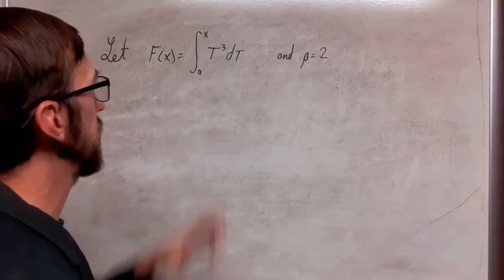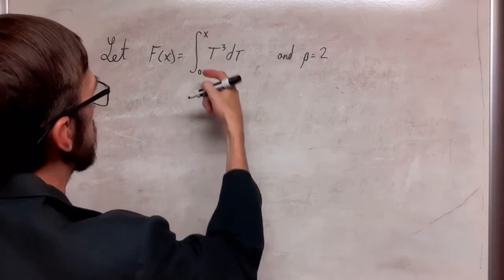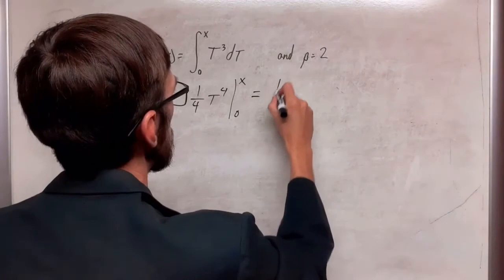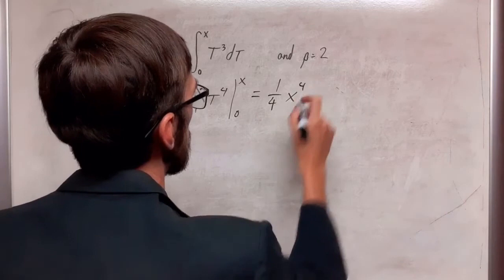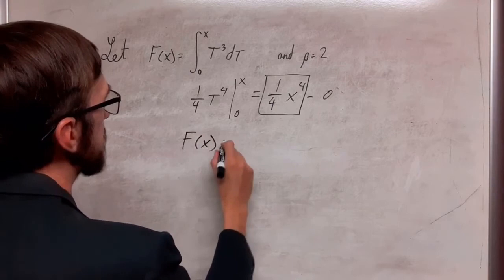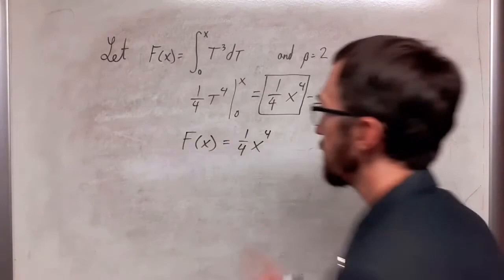So this is kind of fun. When we integrate we are going to get 1/4 t to the 4th evaluated from 0 to x, and then this is going to go to 0. So we end up with this when we integrate the right hand side. So we have that big F of x is equal to 1/4 x to the 4th.